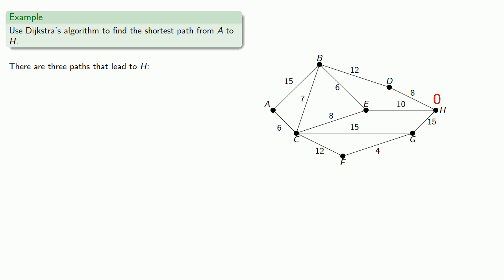Now there are three paths that lead to H: D to H, distance 8; E to H, distance 10; and G to H, distance 15.